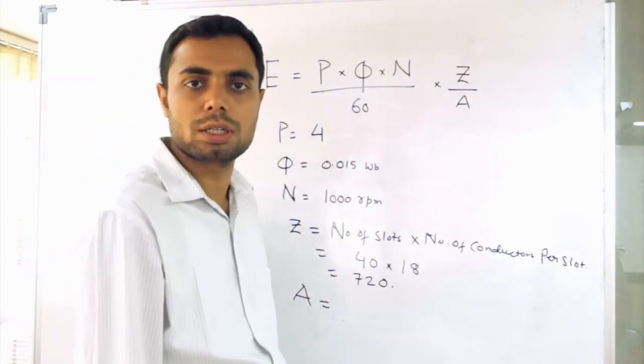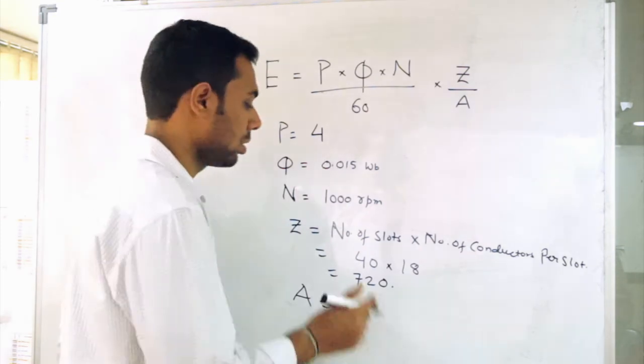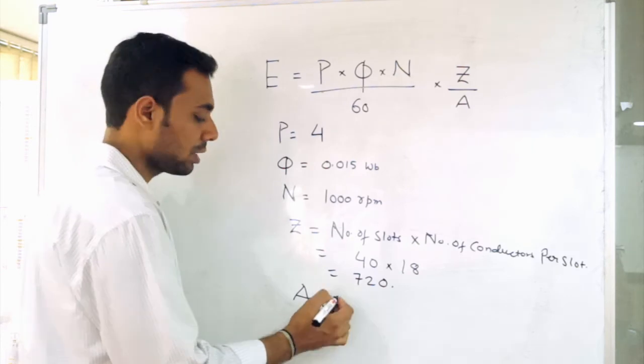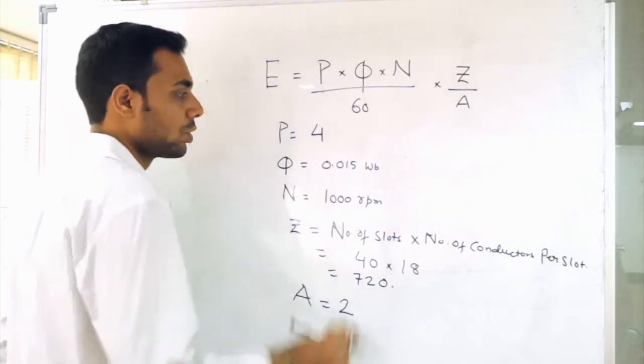What is A, number of parallel paths? The motor given in the question is wave wound. So for wave wound DC motor what is the number of parallel paths? It is equal to 2. So let's solve this problem.